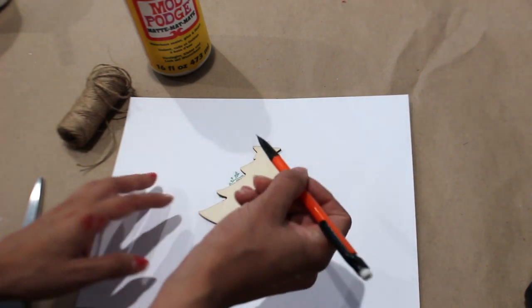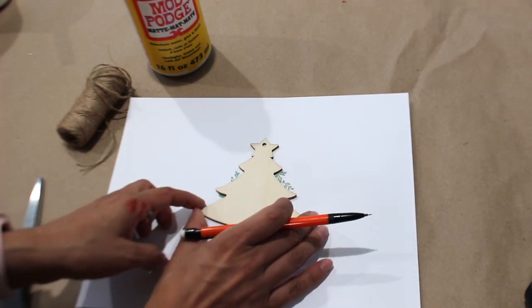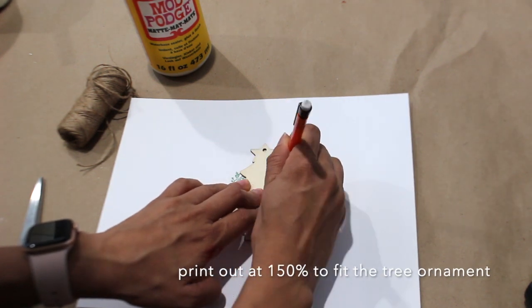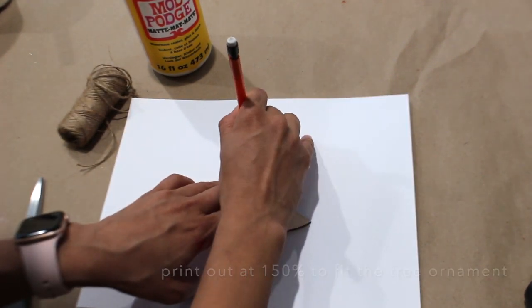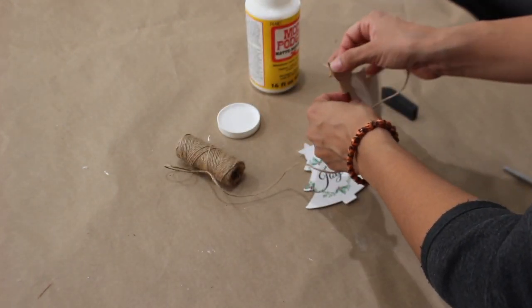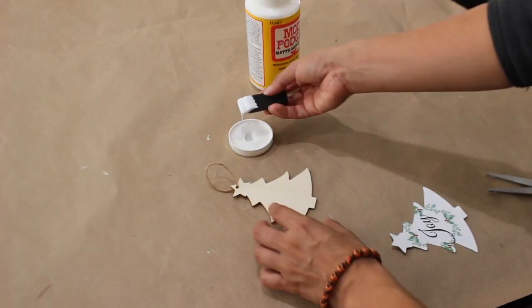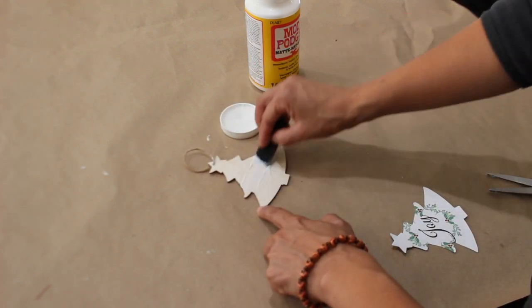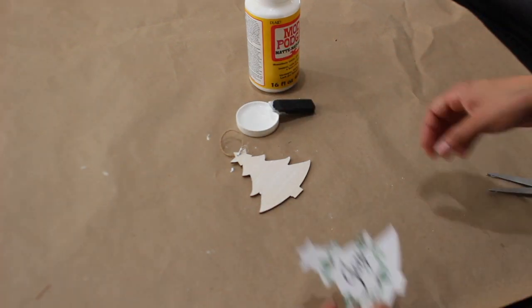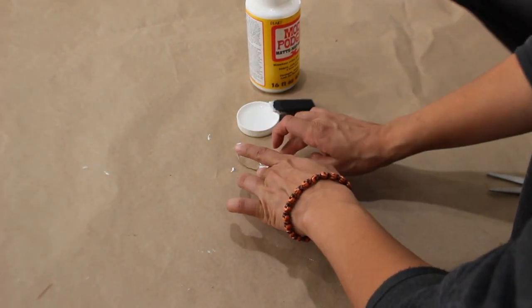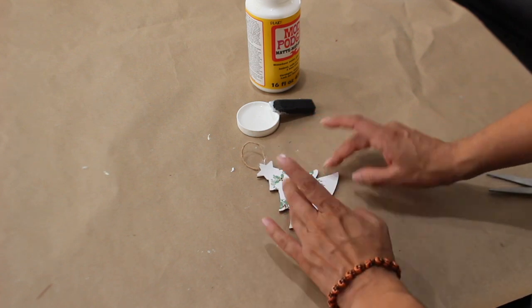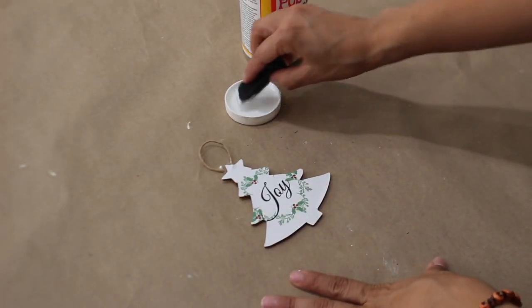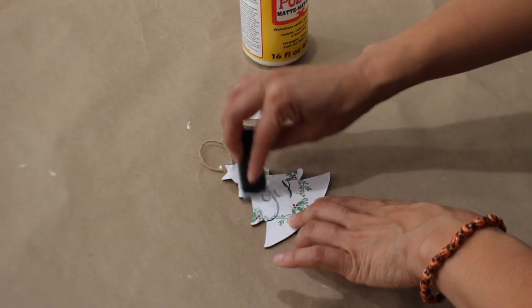Now I am going to add the twine through the little hole. Now lastly, I'm going to add the Mod Podge to the top just to seal it.